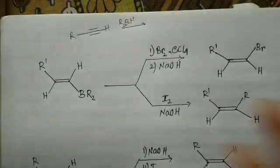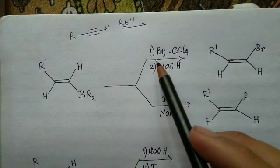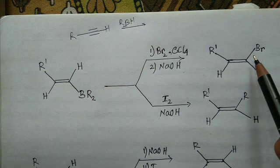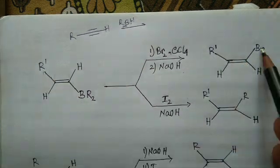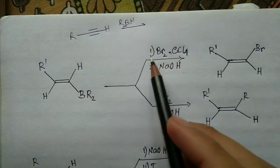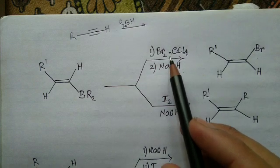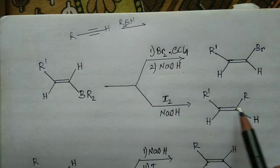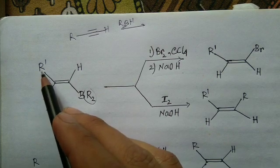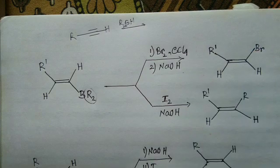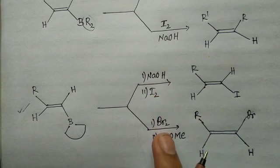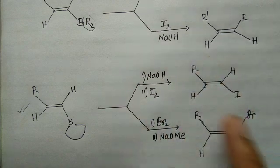For example, bromination in CCl4 followed by treatment with hydroxide gives the cis product, where R' and bromine are cis to each other. But when you use iodine with base in the same step, instead of getting iodine incorporated in the compound, the R and R' groups end up cis to one another. So the stereochemical outcome depends on whether you use iodine or bromine and whether the halogen is added in the second or first step.